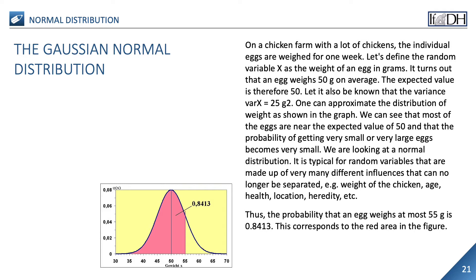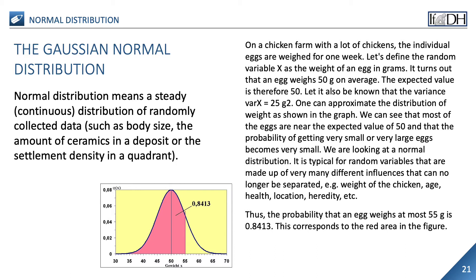Normal distribution is typical for random variables that are made up of very many different influences that can no longer be separated — for example, weight of the chicken, age, health, location, heredity, etc. The probability that an egg weighs at most 54 grams is 0.8413, corresponding to the red area in the figure. Normal distribution is therefore understood to mean a steady, continuous distribution of randomly collected data. This includes, for example, the height or intelligence of people, but also the amounts of ceramics in a deposit or the settlement density in a quadrant if it is not subject to special culture-related changes. The normal distribution therefore applies to all random samples of a population.